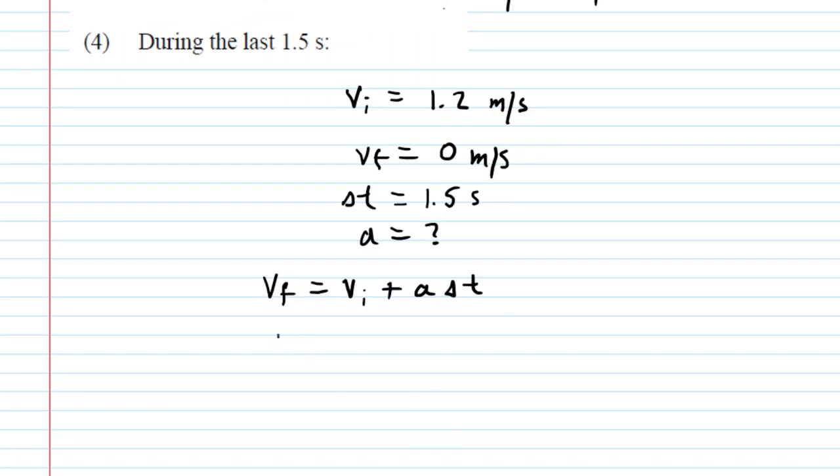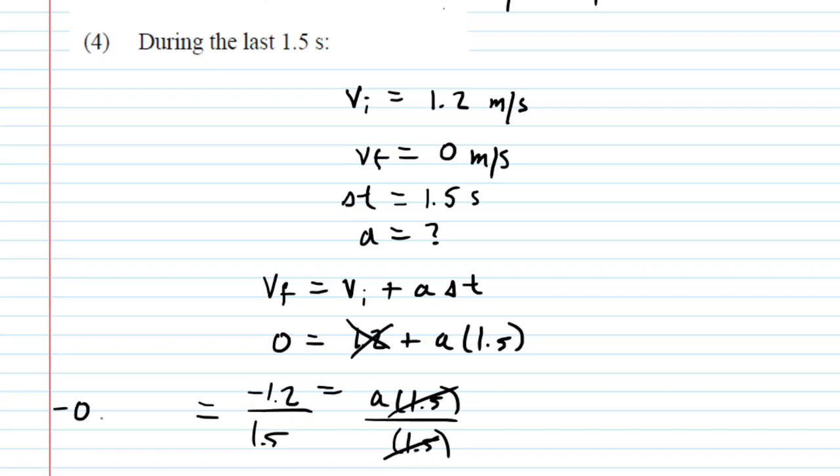So there is that same equation. We will plug in the data, and then we're going to solve for the acceleration. Same idea, but this time we have to subtract the 1.2 from both sides of the equation. That'll cancel it out on the right-hand side, and then we end up dividing both sides by the 1.5. And when we do that, that'll cancel it out. On the right-hand side, we end up with a negative acceleration, negative 0.8 meters per second squared.